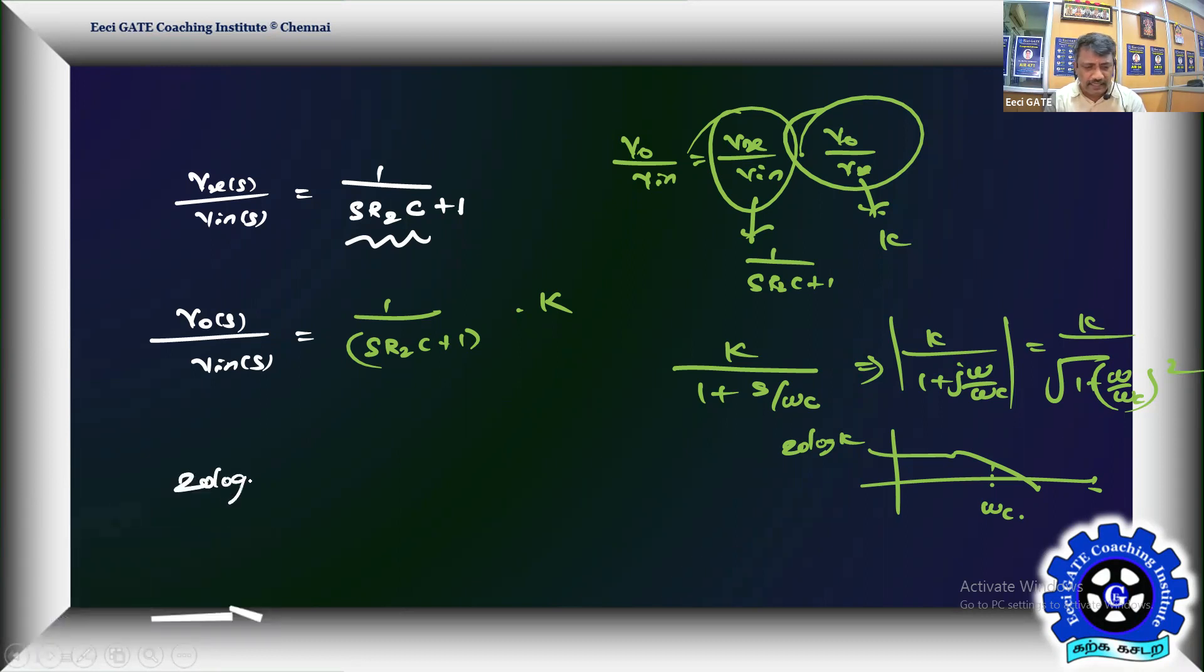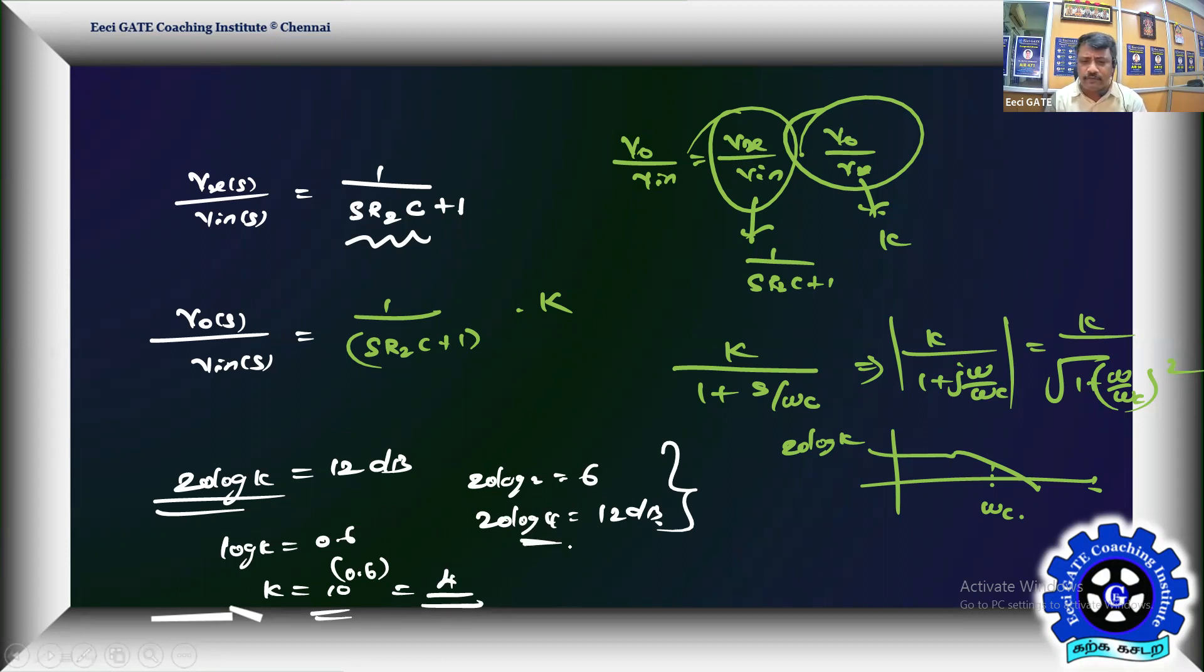20 log k is given as your DC gain or zero frequency gain, that is 12 decibels. So 20 log k equals 12 decibels. If you remember the identity, 20 log 2 equals 6 decibels, so 20 log 4 will be automatically 12 decibels. Otherwise take log k equals 12/20 equals 0.6, then apply antilog on both sides, k equals 10^0.6. To avoid this you can remember and straight away go ahead, so k equals 4.